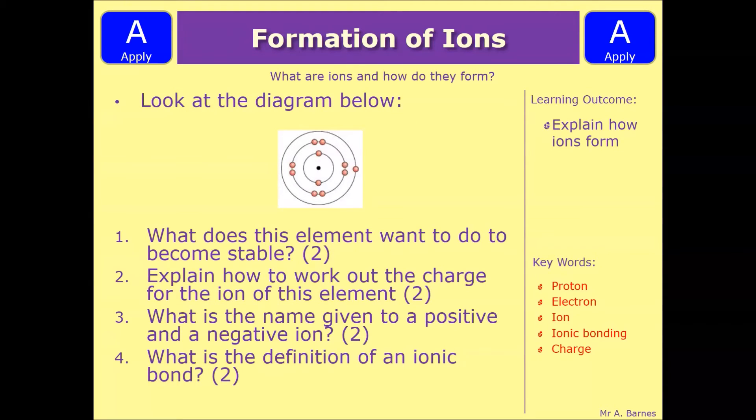Let's have a look at a couple of questions then. So there are four questions for this one, because it's quite a long topic. Number one, what does this element want to do to become stable? So you have an example of an element here with one electron in the outer shell. What does it want to do? Two marks. Explain how to work out the charge for the ion of this element. Two marks.